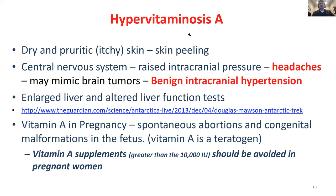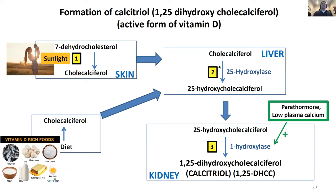Fat-soluble vitamins: remember any sort of obstruction will cause a problem absorbing these. Hypervitaminosis A - you'd have to take a huge amount - can cause intracranial hypertension. Also importantly, vitamin A can be a teratogen, primarily used for acne prevention. You need to know that.